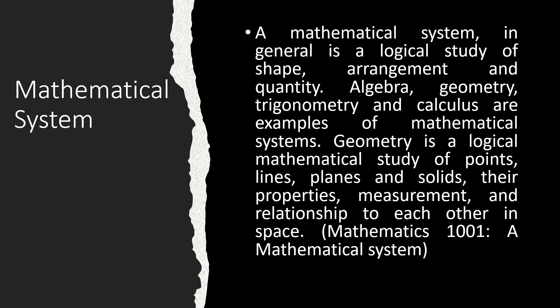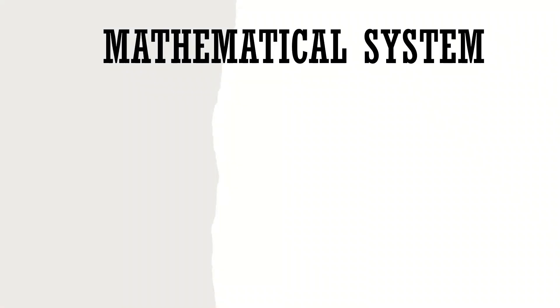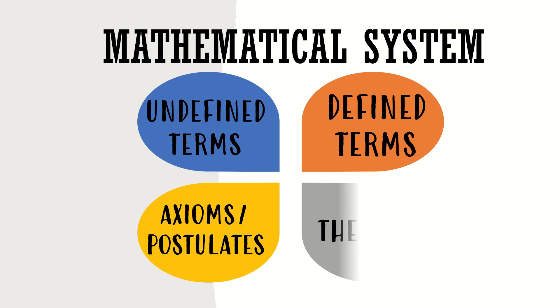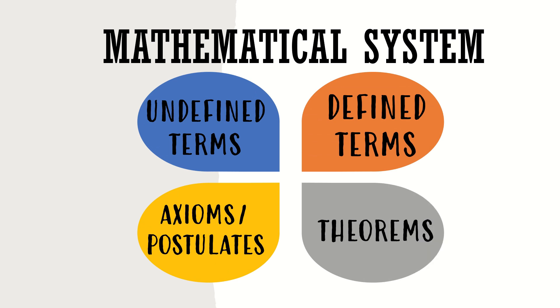Geometry is a logical mathematical study of points, lines, planes, and solids, their properties, measurement, and relationship to each other in space. The mathematical system is composed of the undefined terms, the defined terms, axioms or postulates, and theorems.